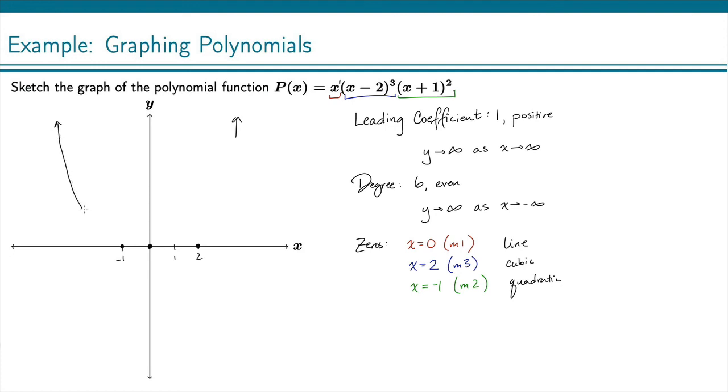And then I just come through and I do each of those behaviors. So here at negative 1, I need to look like a quadratic, so like a little parabola. And then at 0, I look like a line. I just cross through like a line would. And then at x equals 2, it needs to look like a cubic. So that's where it kind of flattens out for a moment, and then continues on. And there is a sketch of our polynomial.